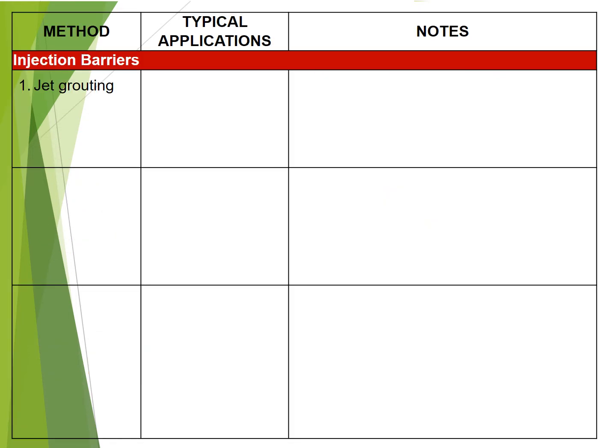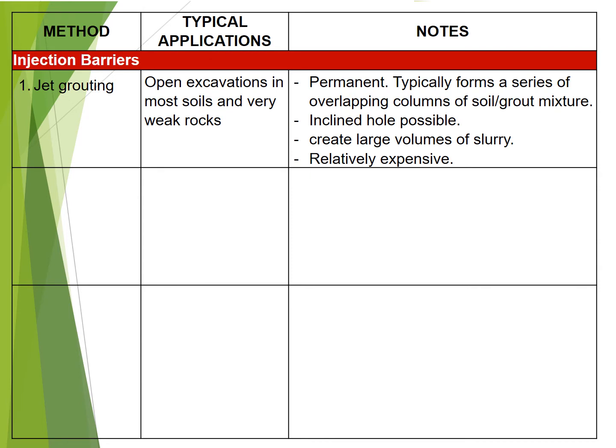1. Jet grouting: used for open excavations in most soils and very weak rocks. Permanent. Typically forms a series of overlapping columns of soil-grout mixture. Inclined holes are possible. Creates large volumes of slurry. Relatively expensive.